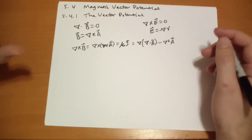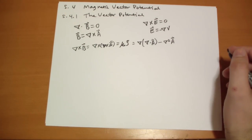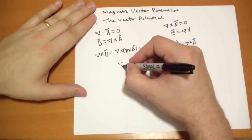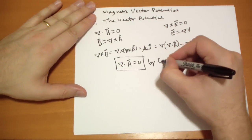Now, we get to choose, just like for the potential, we get to choose our zeroes. Well, for the A vector, we're going to choose that the divergence is always equal to zero, by choice.